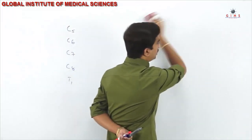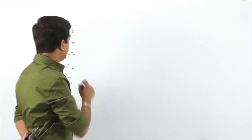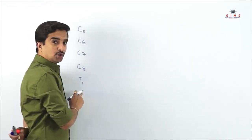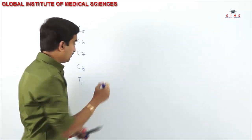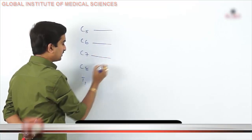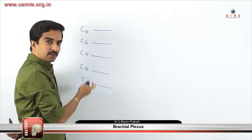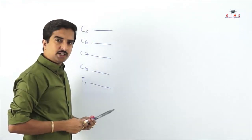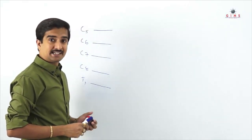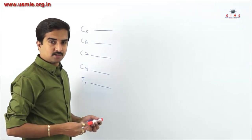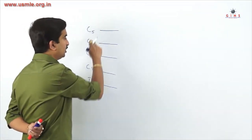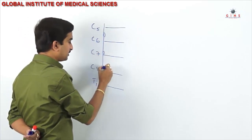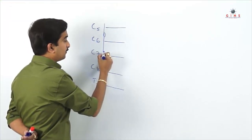The roots of the brachial plexus are formed by the anterior primary rami of spinal segments C5 to T1. An important point: close to the origin of the roots, they receive grey rami communicantes from the sympathetic trunk — postganglionic sympathetic fibers that enter the roots to supply the periphery.